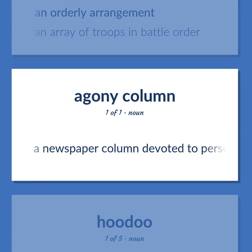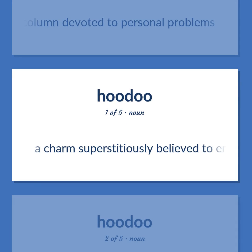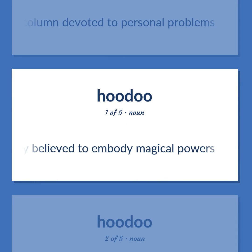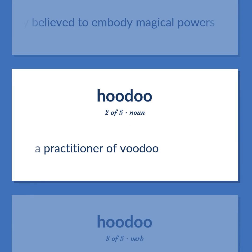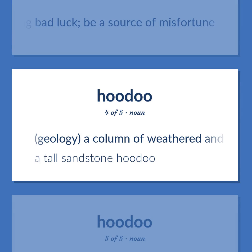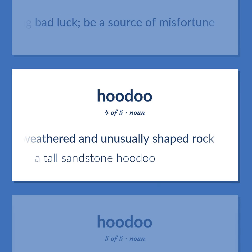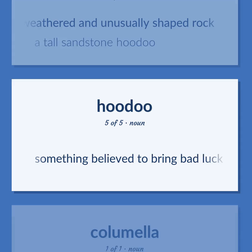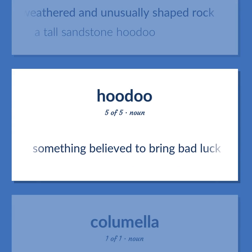Advice column: A newspaper column devoted to personal problems. Hoodoo: A charm superstitiously believed to embody magical powers. A practitioner of voodoo. Bring bad luck; be a source of misfortune. Geology: a column of weathered and unusually shaped rock. Example: A tall sandstone hoodoo. Something believed to bring bad luck.